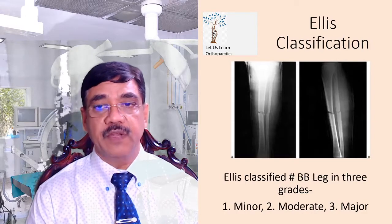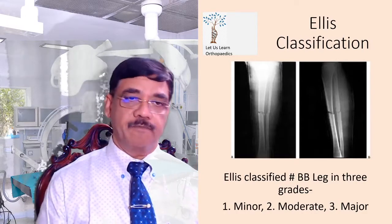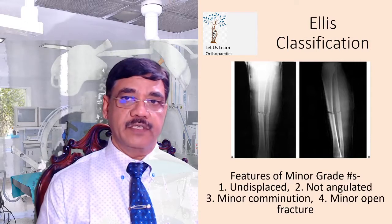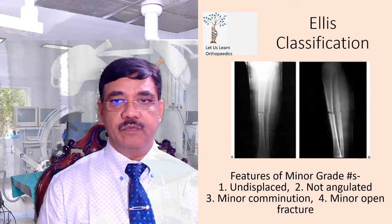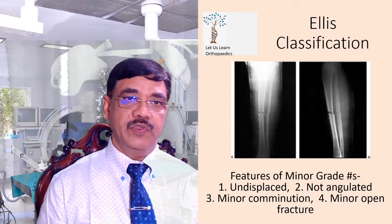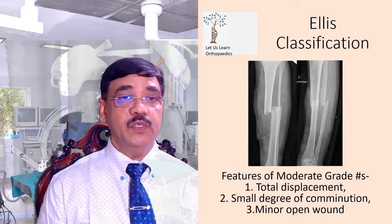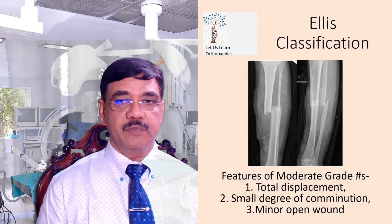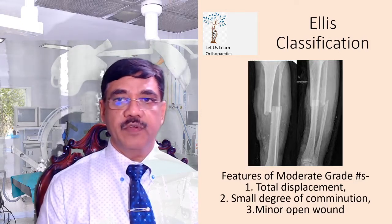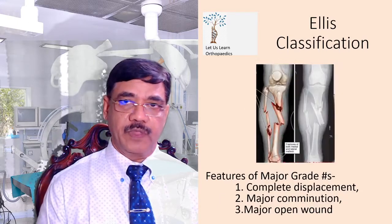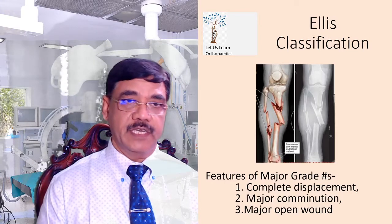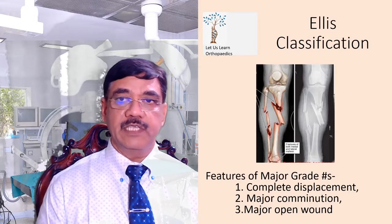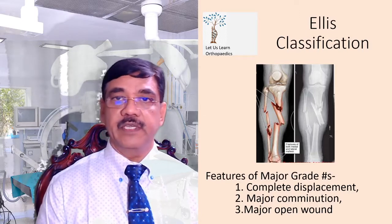Ailes has classified fracture both bone leg into three grades: minor, moderate, and major. Minor grade fractures are undisplaced, not angulated, with minor comminution and minor open fractures. Moderate grade fractures include total displacement, a small degree of comminution, and minor open wound. Major fracture grades include complete displacement, major comminution, and major open wounds.